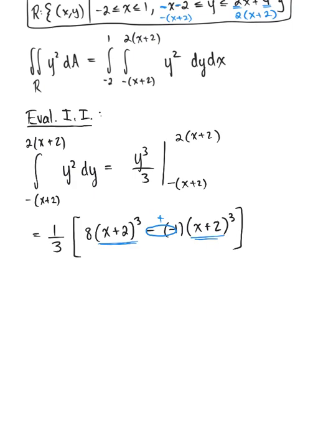We have a negative times a negative, which becomes positive, and we have matching binomials. So we're left with one third times (8 plus 1) times (x plus 2) cubed, which is one third times 9(x plus 2) cubed. Since 3 goes into 9 three times, our inner integral simplifies to 3 times (x plus 2) cubed.